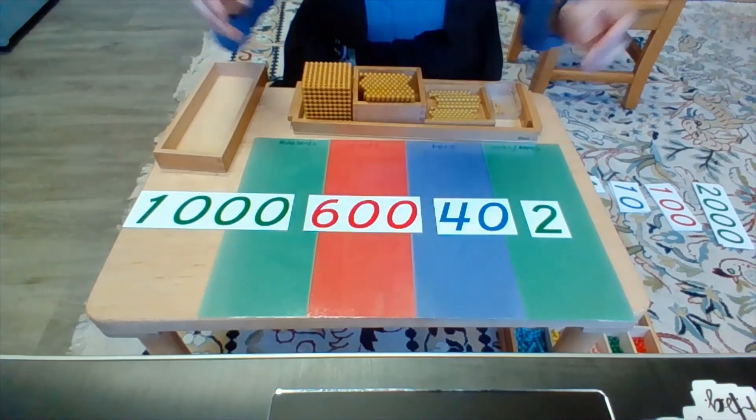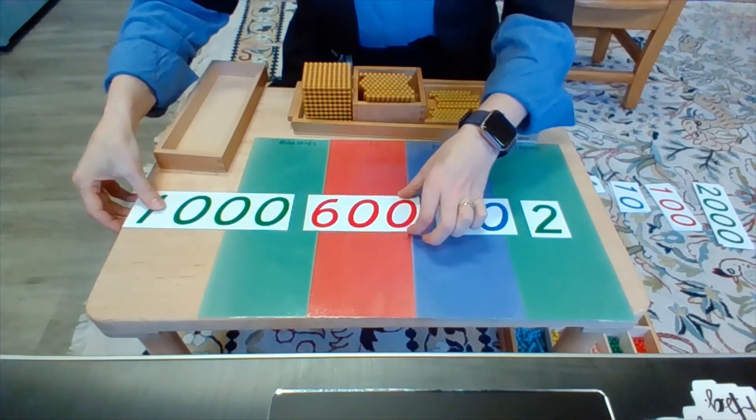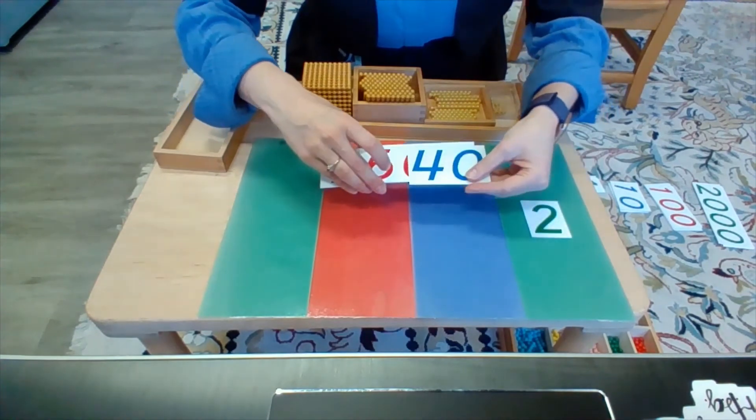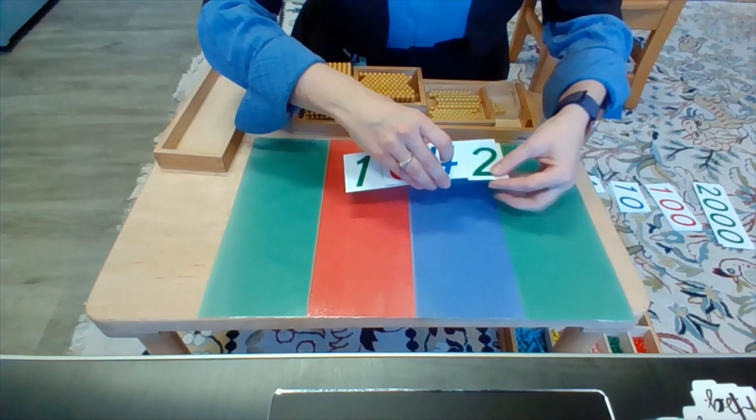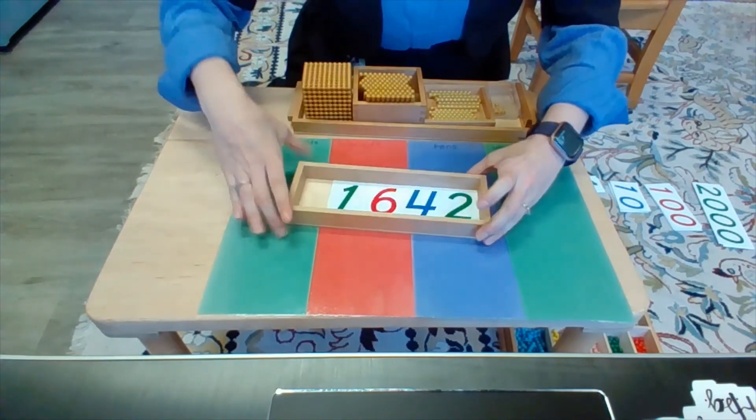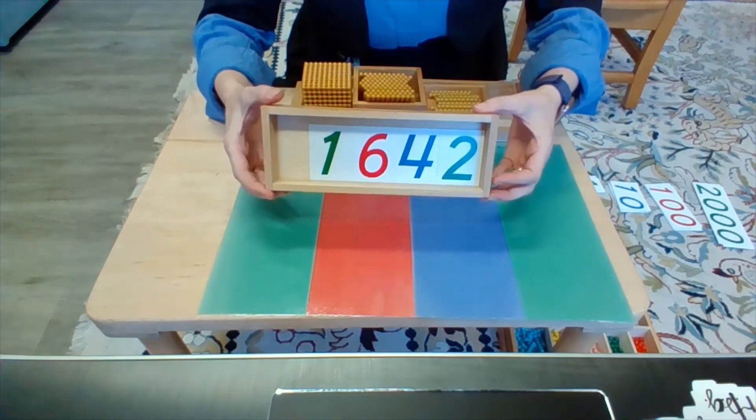When I put this back together to make standard form, I am going to layer them over, one over the next over the next. And that is how I end up with my final number. And here you can see it all put back together again, 1,642.